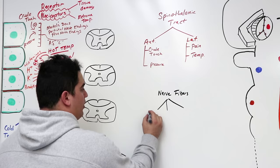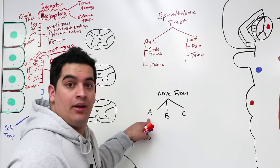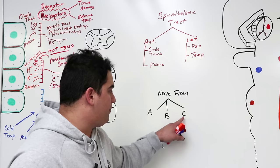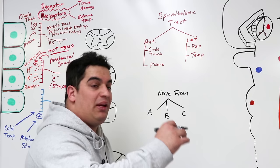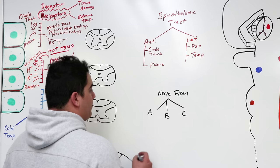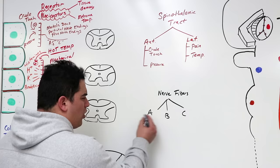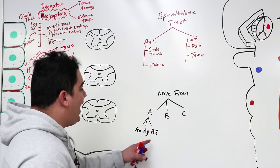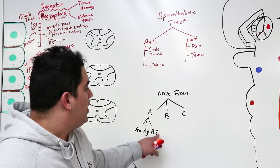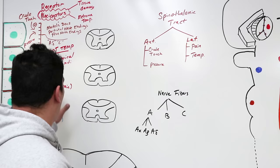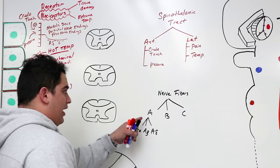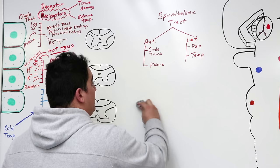Myelination determines the speed of the action potential — A is fastest, B is next, and C is slowest, which is why we call it slow pain: the action potentials don't move very fast. Within A, there are subtypes: A-alpha, A-beta, and A-delta. A-delta picks up fast pain and cold temperatures; C is for slow pain. That's where those names come from — A is heavily myelinated, C is lightly myelinated — and that determines the speed of the action potential.